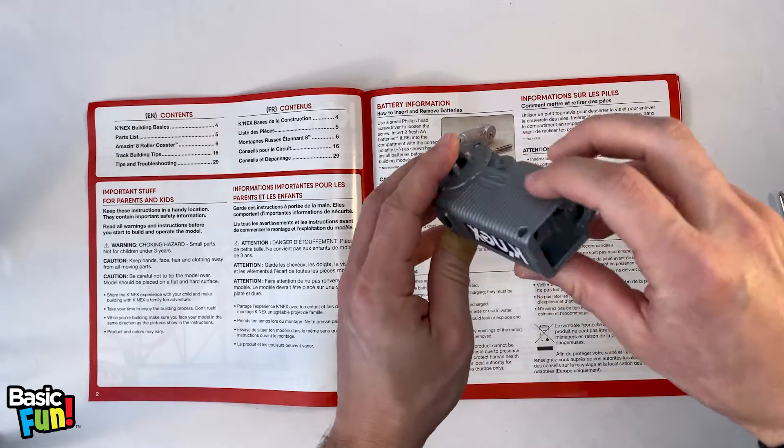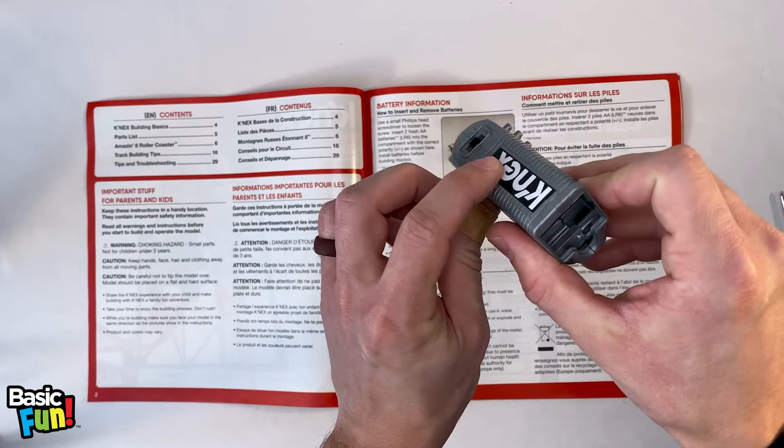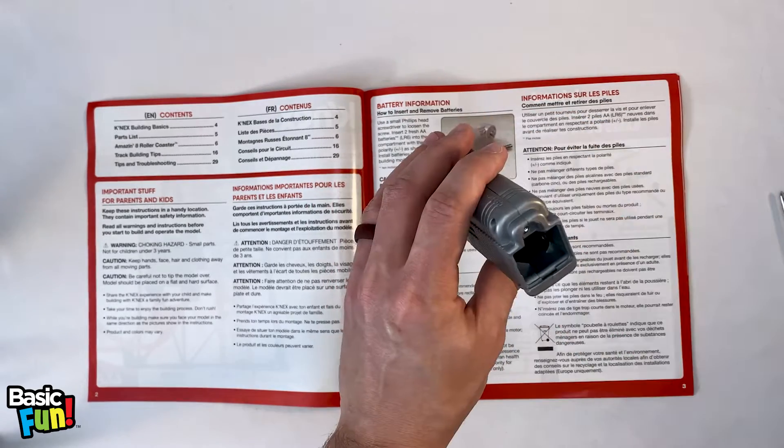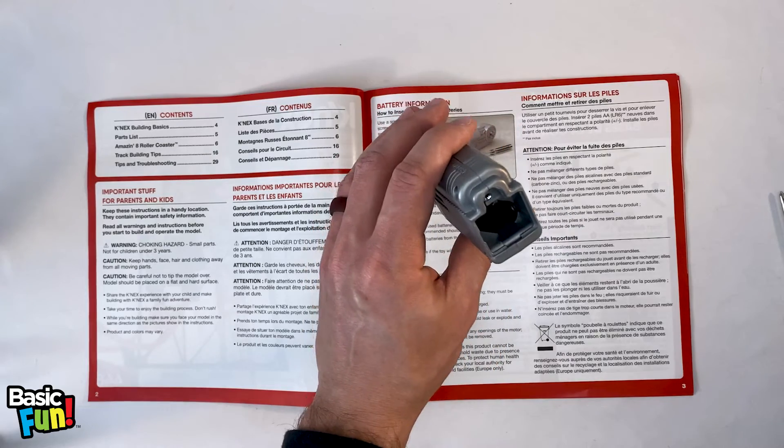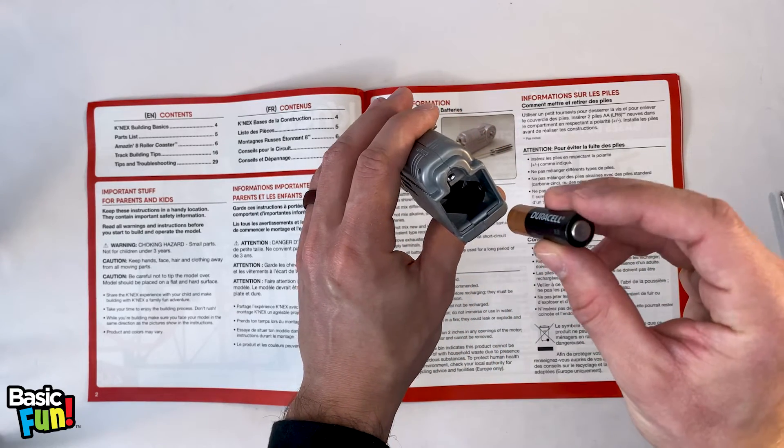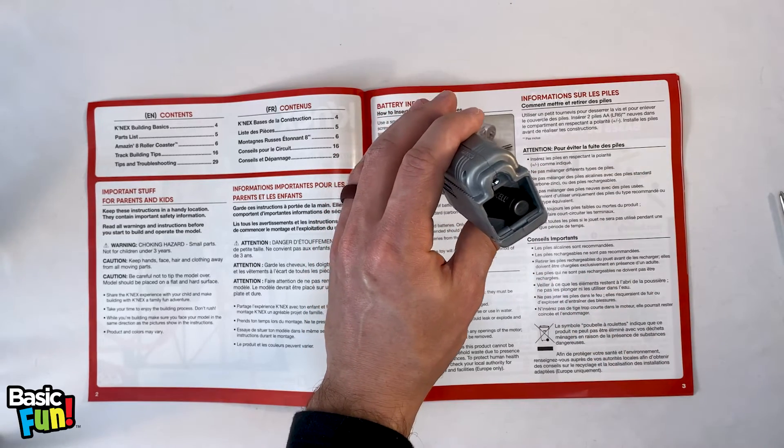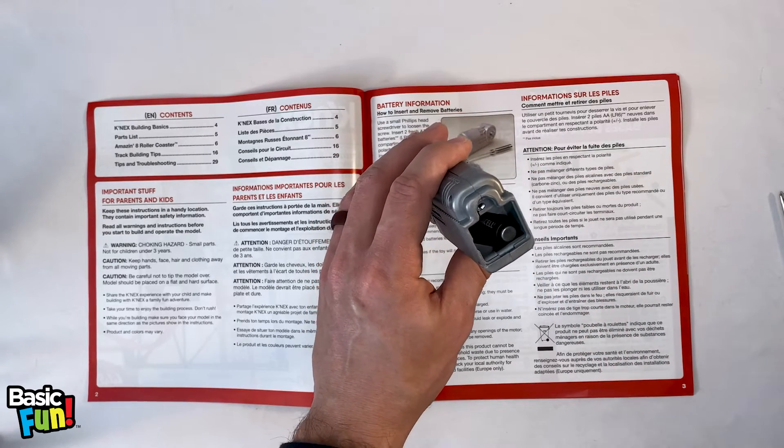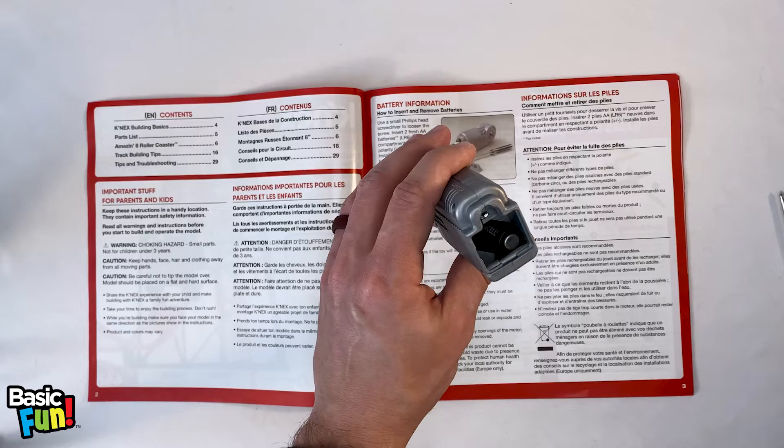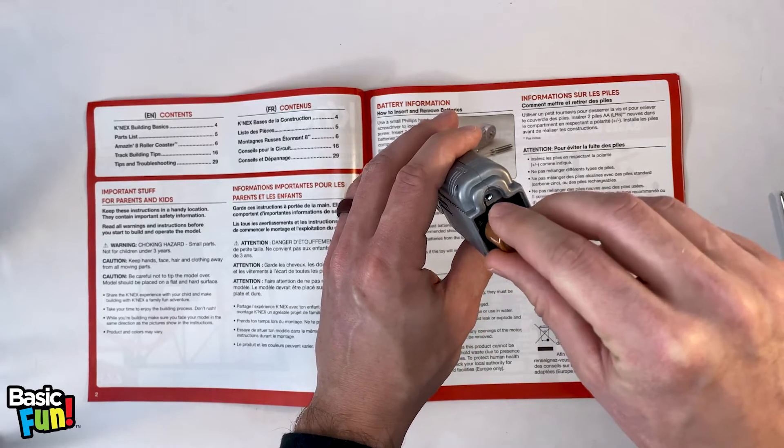The easiest way to install the batteries is to make sure the Kinex logo sticker is facing down. Now, take your first AA battery and drop it in just like this into the bottom right hand corner of the battery housing. Then take your other AA battery and then drop that into the upper left hand corner.